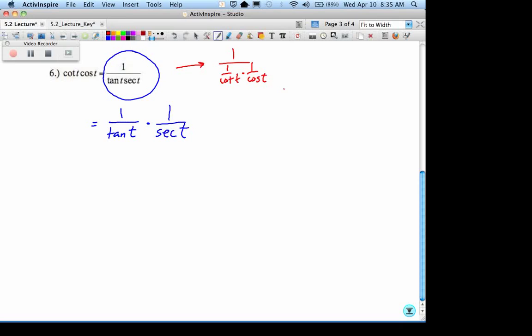Because on this one, if you turn around and multiply, it's 1 times cotangent of T over 1 times cosine of T over 1, which is just cotangent of T times cosine of T, which is what I was looking for.